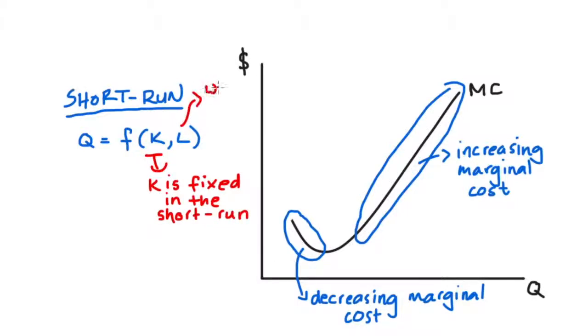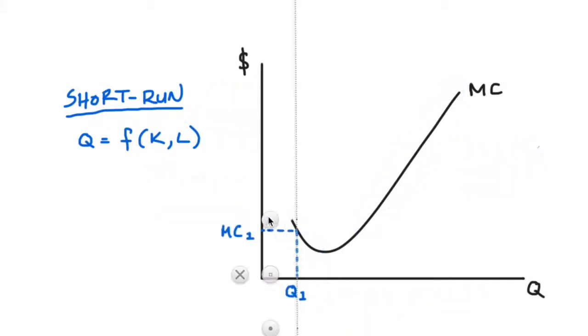This is important. If we want to produce more, we can only increase the amount of labor that we're using. We can't change our capital. So let's say initially that we're producing Q1 level of our product and we increase to Q2 level of production. The marginal cost here, as you can see, is lower for these later units.